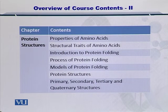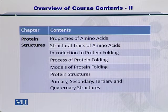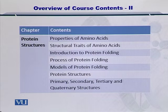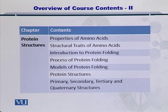In the next chapter, we'll talk about protein structures. We'll look at the specific properties of amino acids and their structural traits, followed by their folding and the process of folding. We'll also consider several models and the resulting protein structures. Specifically, we'll see the primary, secondary, tertiary, and quaternary structures and their folding.